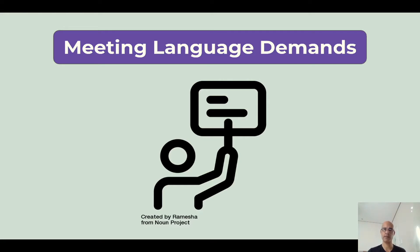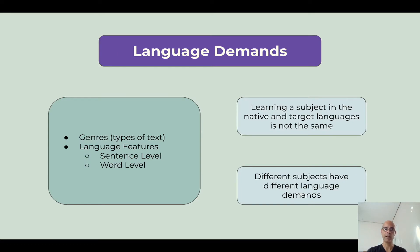So what are we talking about here? Language demands are the linguistic demands that the curriculum subject, or maybe the students, will have depending on what is being learned. They include usually language features that we saw before, and genres, which is a word for the different types of text. So why are we talking about this?